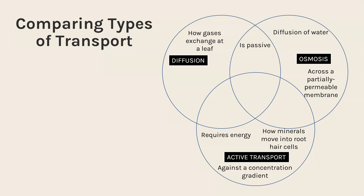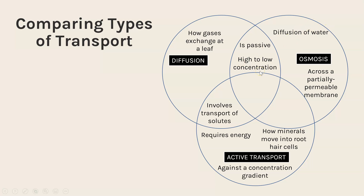Some similarities: diffusion and osmosis are both passive, meaning they do not require energy, and both involve movement from a high to a low concentration — with osmosis, that means a high concentration of water to a lower concentration of water. For diffusion and active transport, it involves transport of the solute, since osmosis is the movement of water. And all three of them are types of movement — that's the only thing all three have in common.